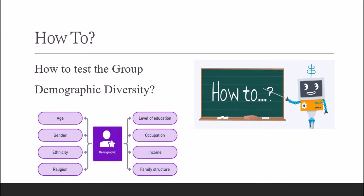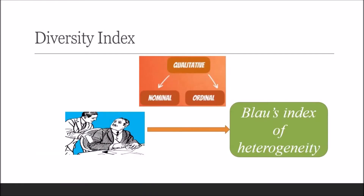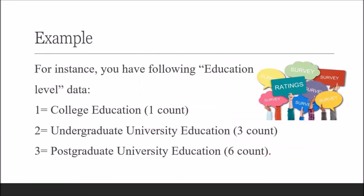Since demographic variables are tapped at nominal or ordinal levels, we can test the group demographic heterogeneity in our qualitative variables. To test this, we need to calculate Blau's Index of Heterogeneity. For instance, you have the following education level data.